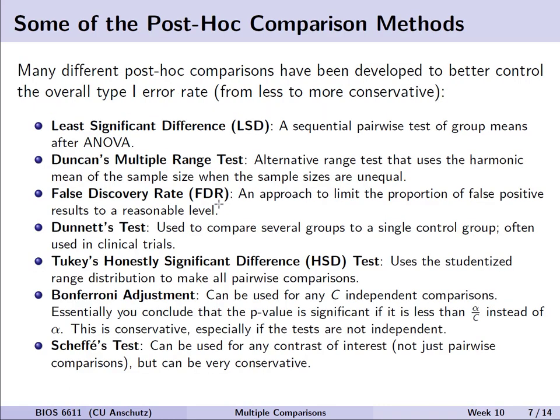Here's a selection of a few post-hoc comparison methods we may use to make adjustments when conducting multiple tests or comparisons. They are arranged generally from being the least to the most conservative. For example, we have the LSD, or least significant difference, which if we know in advance we wish to do, we can incorporate into an ANOVA in a way that is less conservative and more powerful — minimizing the chance of making a type 2 error.